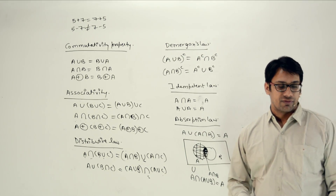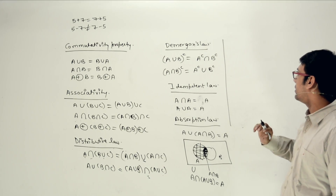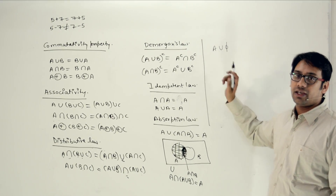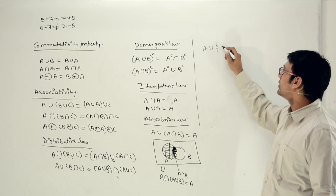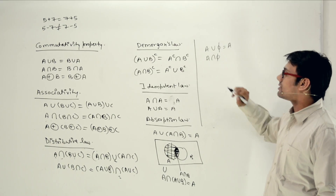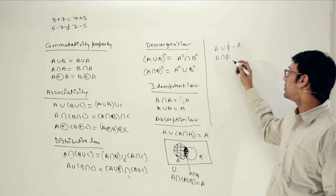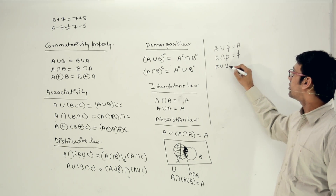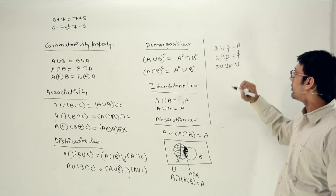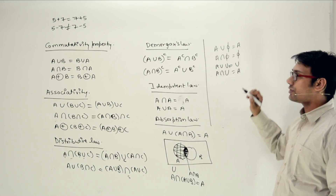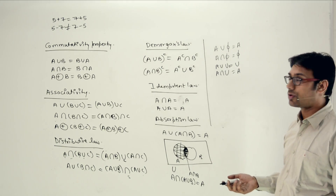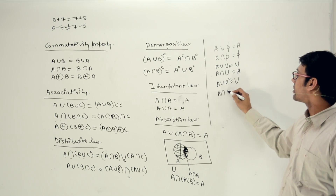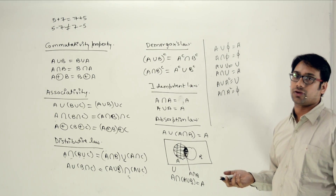We can also have other simple laws. If we have set A, then A union the null set (phi) equals A, and A intersection the null set equals the null set. A union the universal set gives the universal set, and A intersection the universal set gives A itself. Also, A union A complement gives the universal set, and A intersection A complement gives the null set, since they have nothing in common.